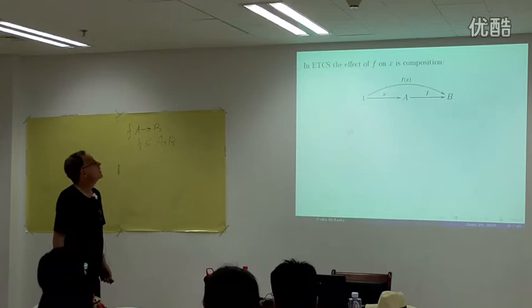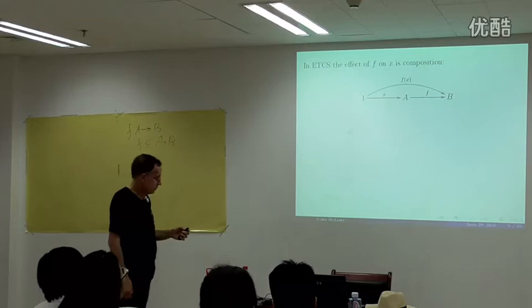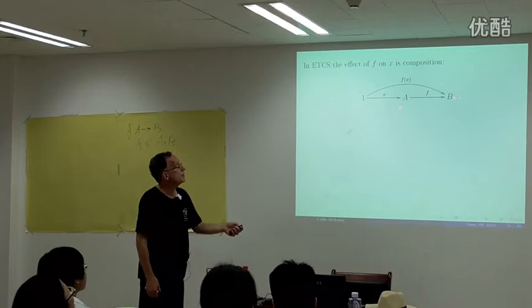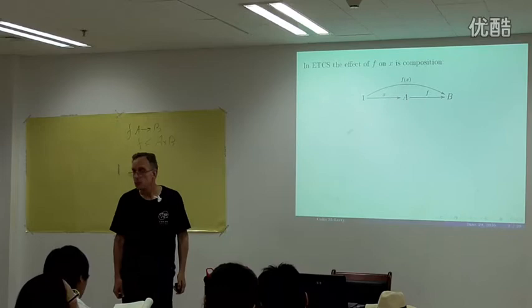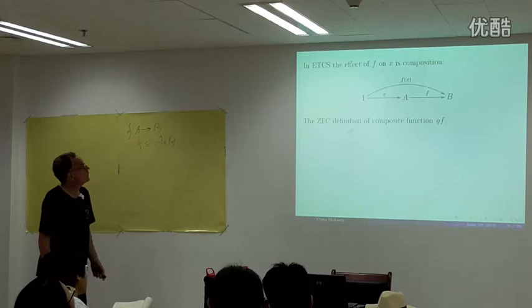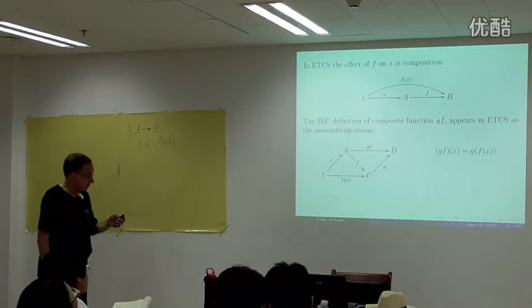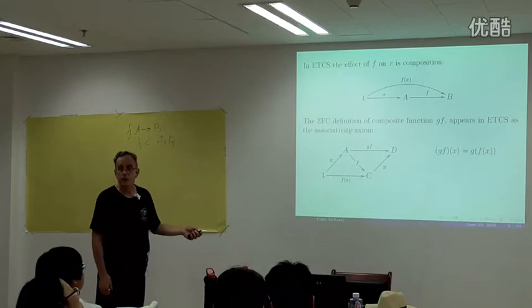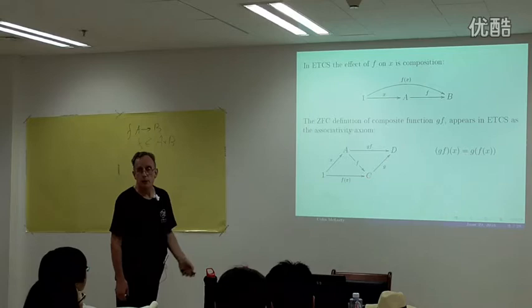In ETCS, the effect is composition. An element of A is a function from 1; a function from A to B has a composite with it, and that composite is the value of the function at that element. The definition of composite function in ETCS appears as the associativity axiom. This equation is just a case of associativity.